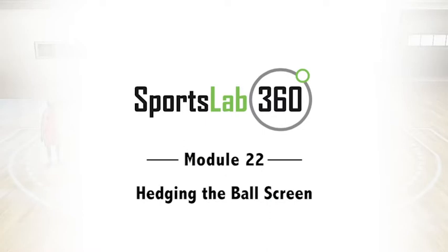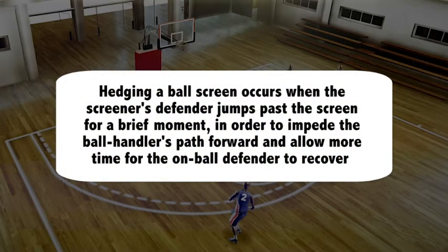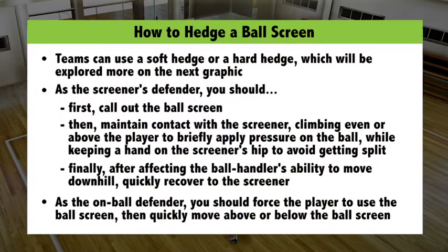Welcome to Module 22, Hedging the Ball Screen. Hedging a ball screen occurs when the screener's defender jumps past the screen for a brief moment in order to impede the ball handler's path forward and allow more time for the on-ball defender to recover. Here are some basic points to help you when hedging a ball screen.